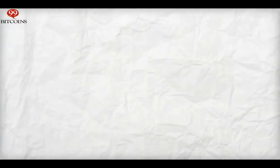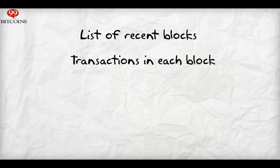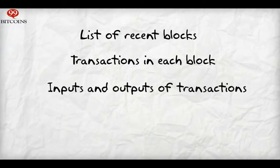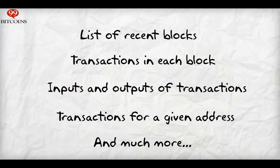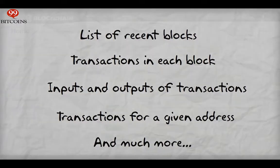Usually the block explorer software will supply some or more of the following: a list of a chain's recent blocks, transactions in a given block, links to the previous and next transaction involving each input and output, a list of all transactions involving a given address, current and historical address balances, and a way to search for blocks, transactions, and addresses.